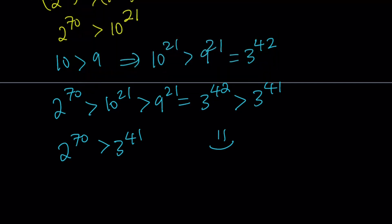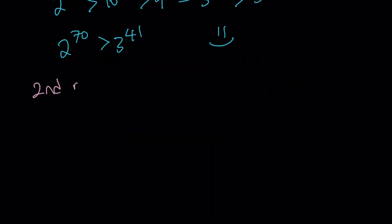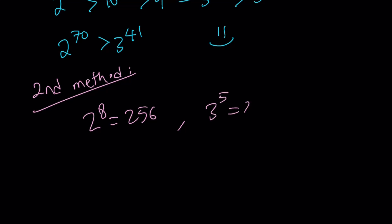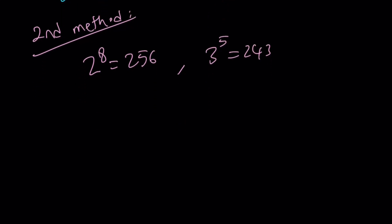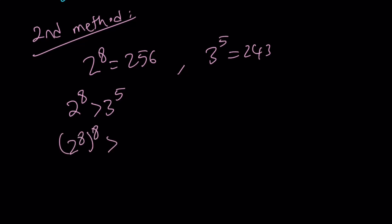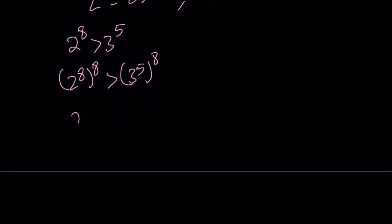Let's take a look at the second method. My second method involves using powers of 2 and 3 instead of using a 10. We have 2 to the power 8 equals 256, and 3 to the power 5 equals 243. Again, those numbers are pretty close. From here, we can say that 2 to the 8th power is greater than 3 to the 5th power. Now let's raise both sides to the 8th power, and this gives us 2 to the power 64 is greater than 3 to the power 40.